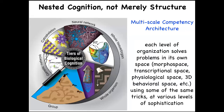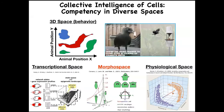The architecture of life is very multi-scale — not just structurally, but each level of the hierarchy is itself competent in various problem spaces: physiological, anatomical, and others. We are reasonably good at noticing intelligence of medium-sized objects moving at medium speeds through three-dimensional space. But there are other spaces in which other types of agents live and solve problems through a perception-action loop.